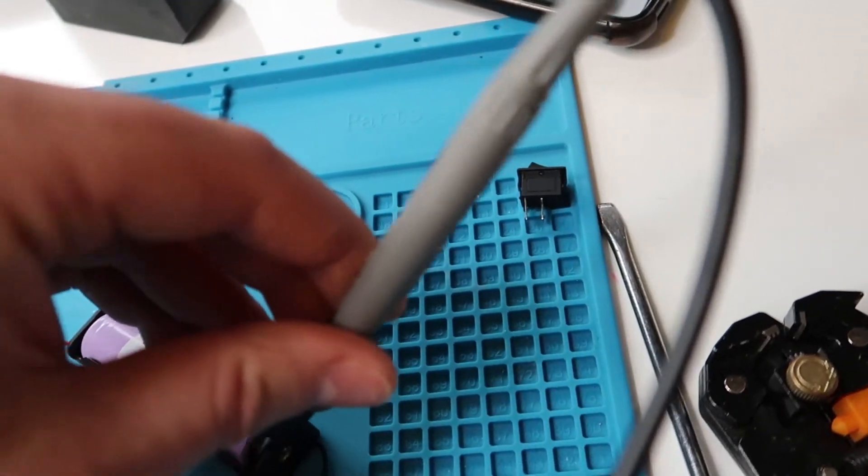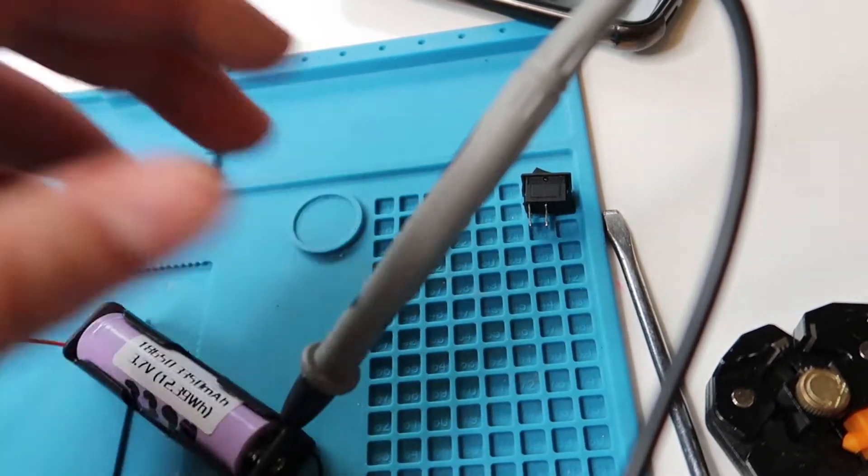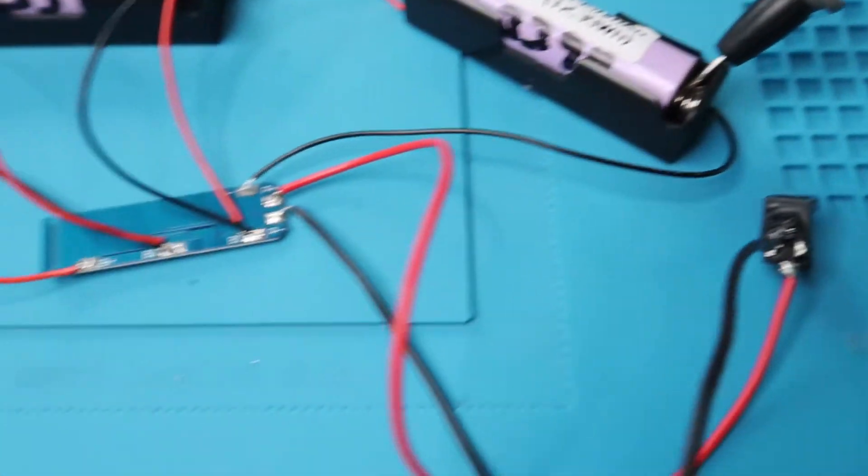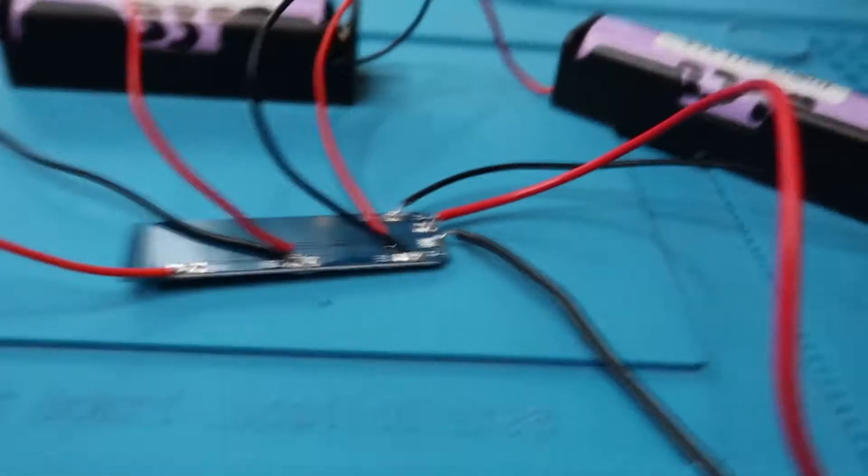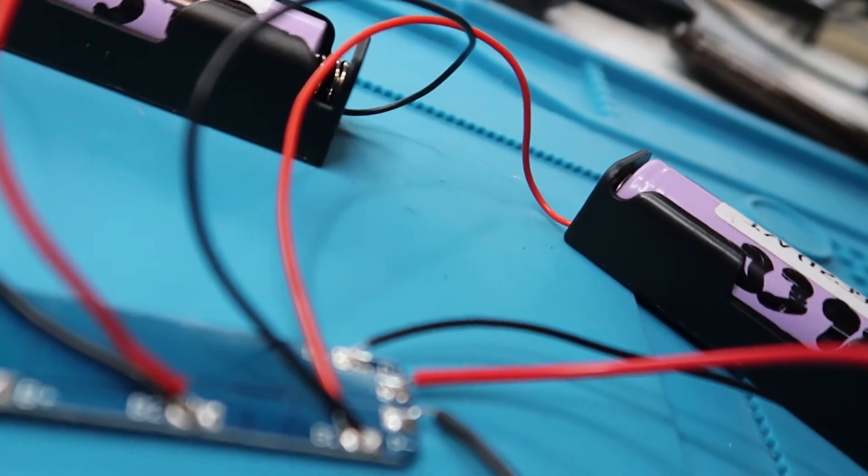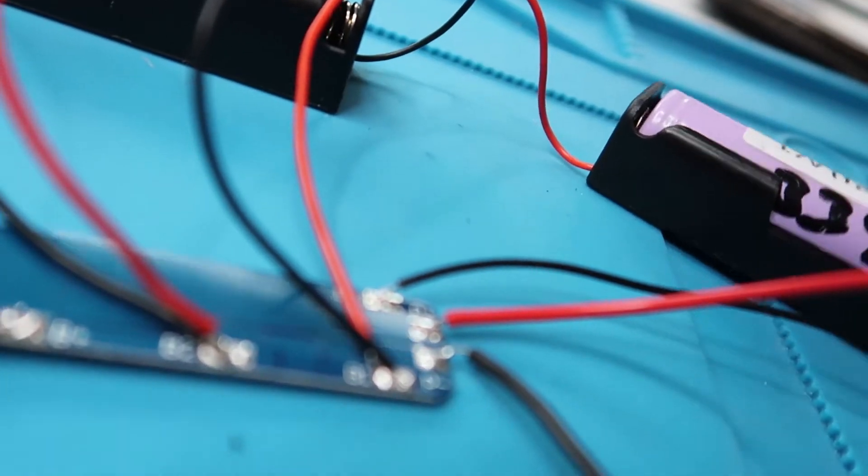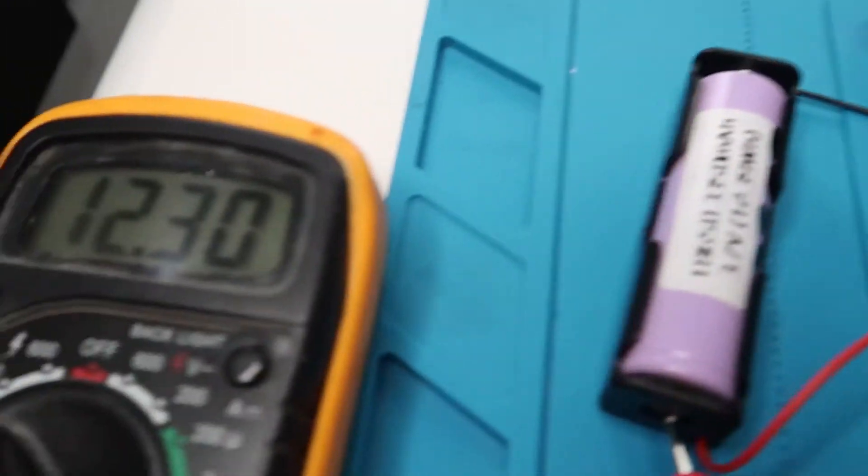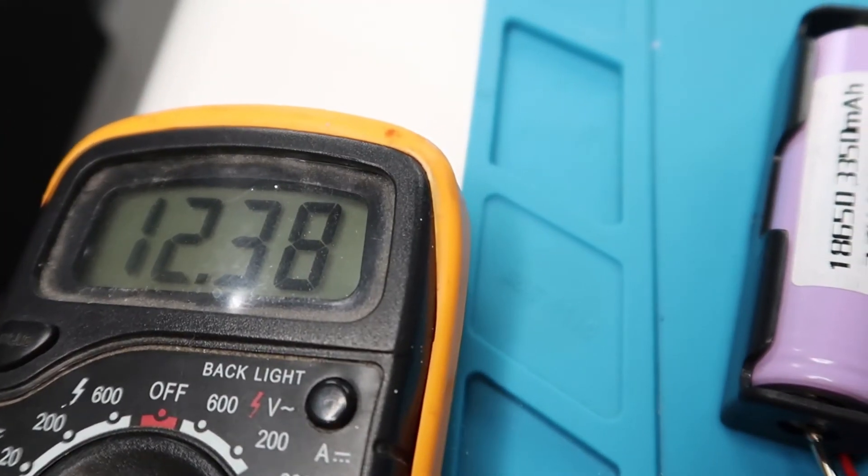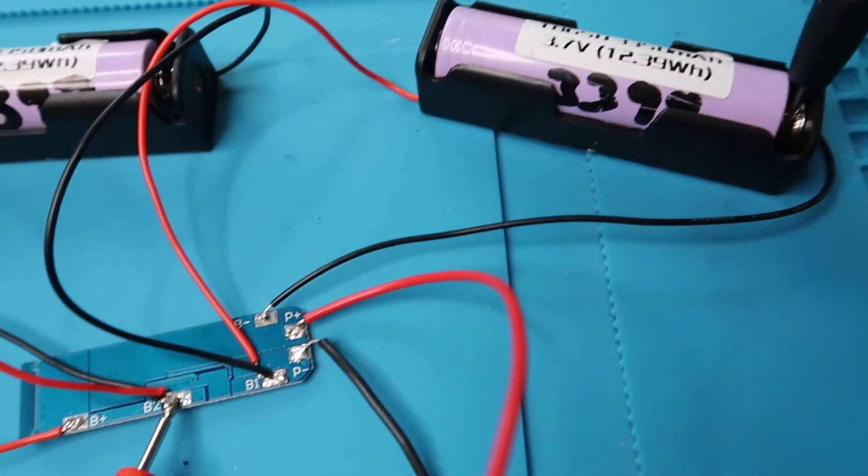If I leave the prong from the multimeter into the negative side of the third battery and I put the positive into the positive side of the first battery, we can then look at the multimeter and see the voltage, which gives us 12.3 or 12.4, which is our 12-volt battery.